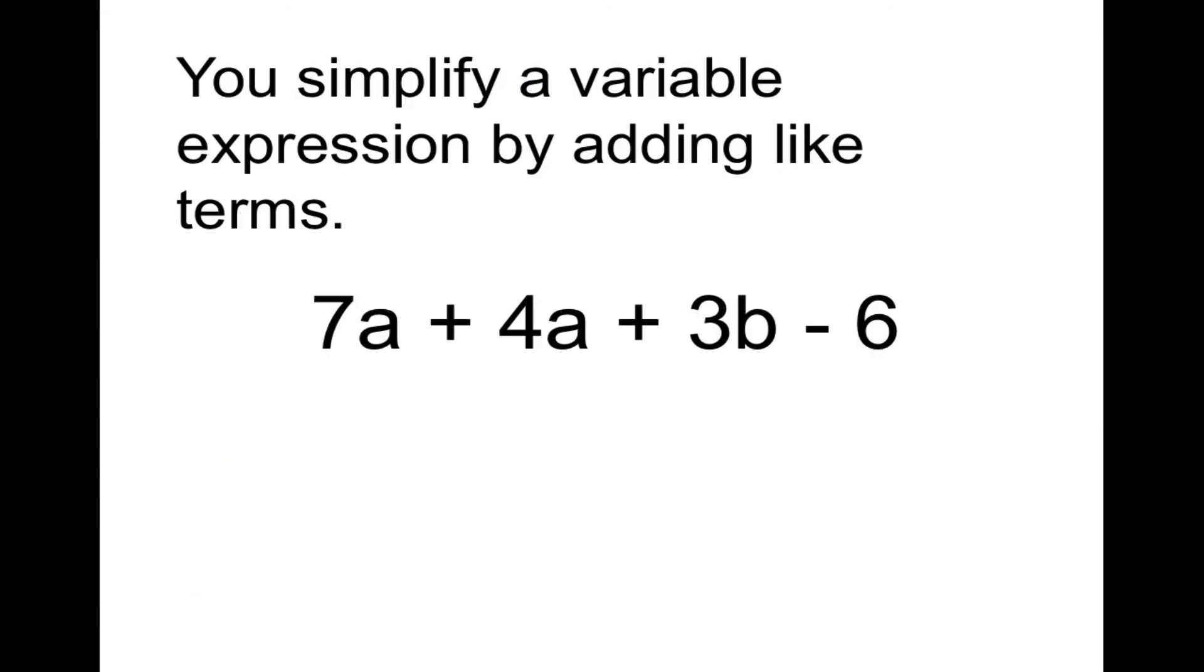Now that we've got our definitions, here's the rule for today. You simplify a variable expression by adding like terms. Let's have one more question for our Cornell notes. Let's do this example. Let's highlight the like terms. 7a and 4a are like each other, so they can be combined to 11a. 7 plus 4 is 11. So when you do this, you add the coefficients and keep the variable.